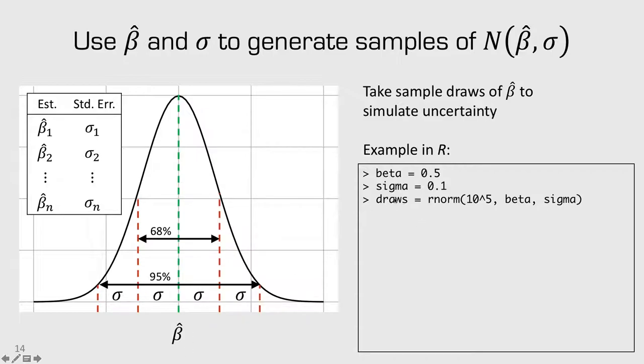And if we were to plot a histogram of all these different values, it would look close to a normal distribution. And we can use all these draws to compute different statistics. For example, if we take the mean of the draws, we get 0.499. Well, that looks pretty close to 0.5.